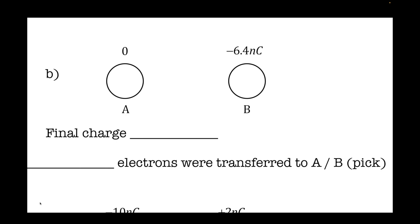In this picture, I have two spheres. They are conductive spheres, so they have electrons that are free to move around. One of them on the right, sphere B, has a negative charge, which means that it has extra electrons.